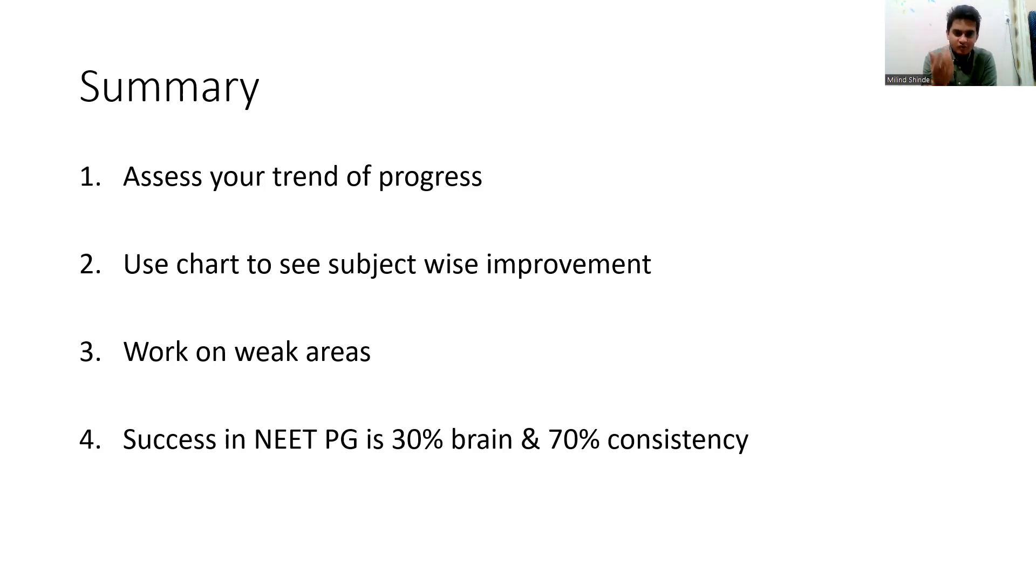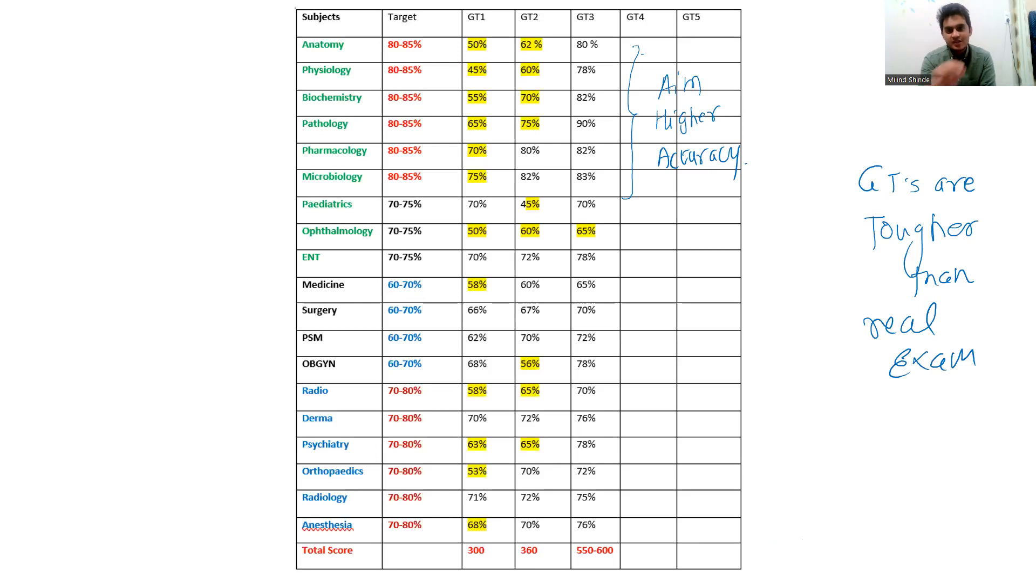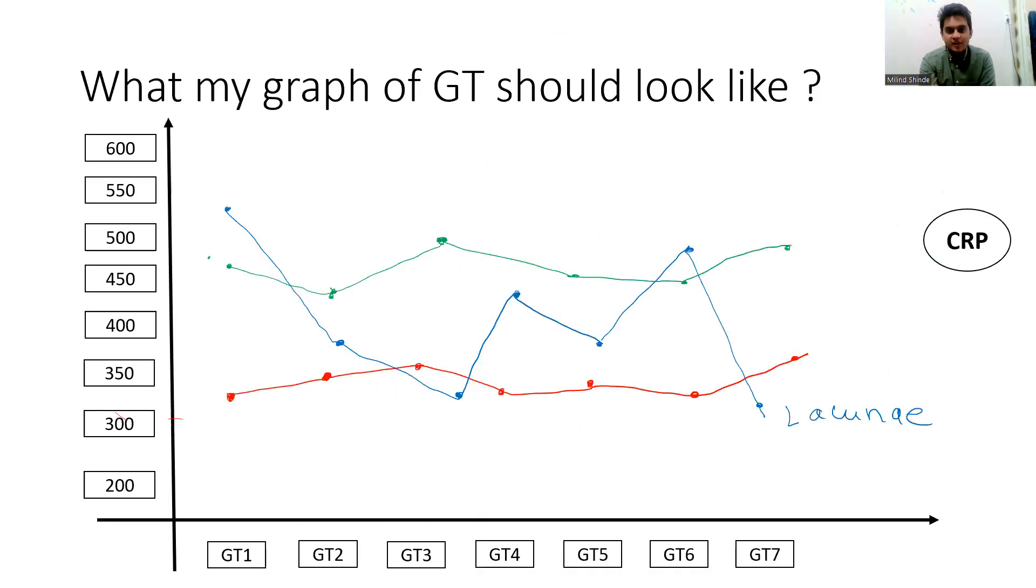Maybe in NEET, you will require more of your thought process or your logical function, maybe. But what I'm trying to make a point here is that being consistent in this exam is the key. So that's all, guys, I want to say. Don't take much tension about your GT score. Assess your weak areas and work on them and make your graph look like this green graph that you get a constant good score. I wish you all the best and I hope this helps you and you integrate this into your application. If you still have any doubt, let me know in the comment section. Take care.